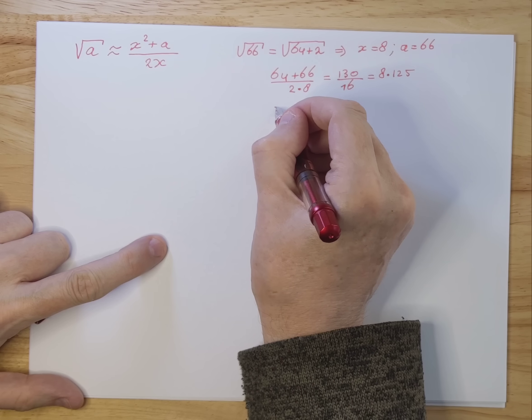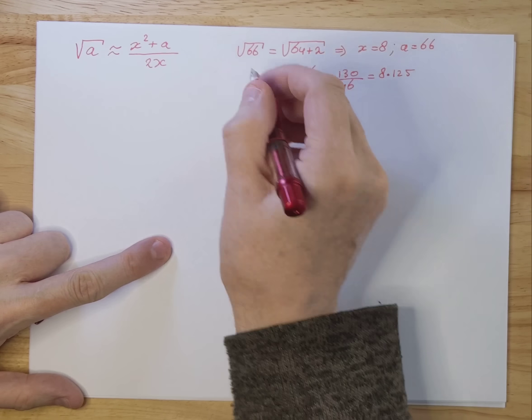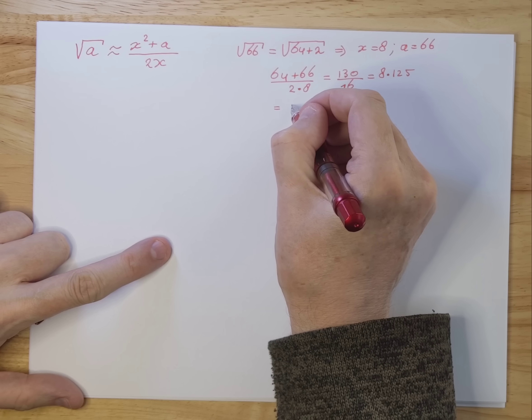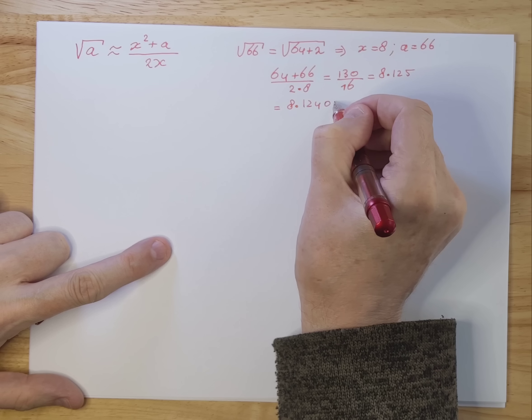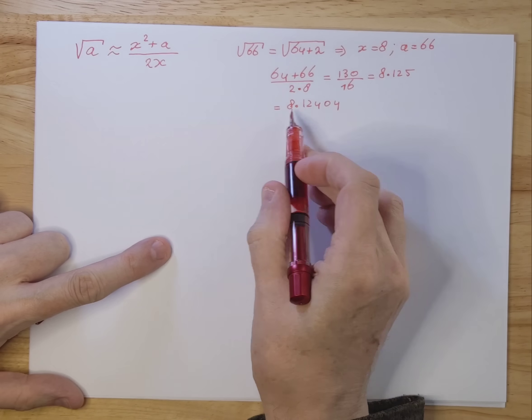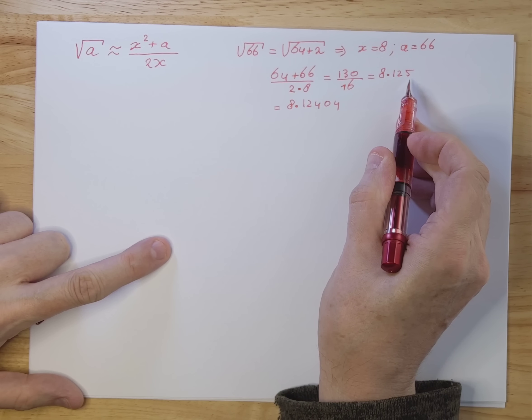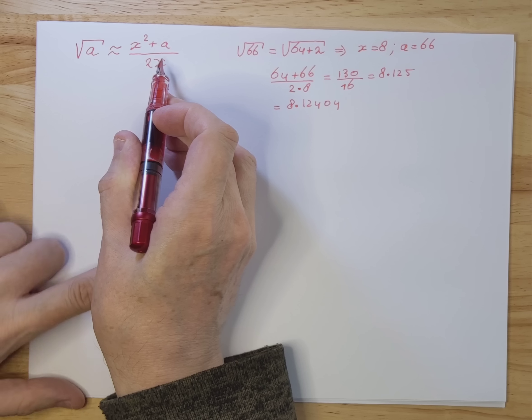If you know the exact or the more accurate result, it is 8.12404. So that's really very close to the 8.125 using this formula.